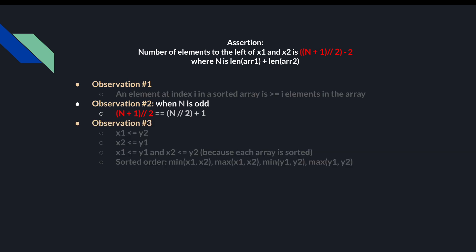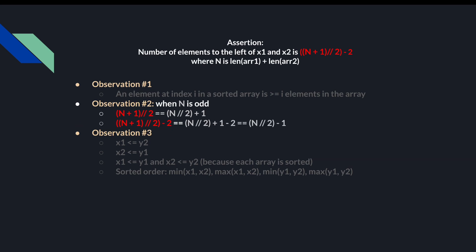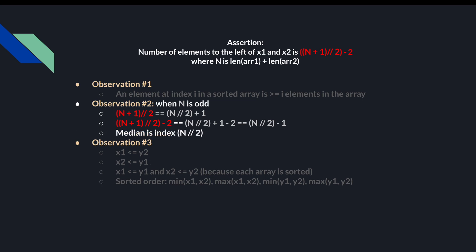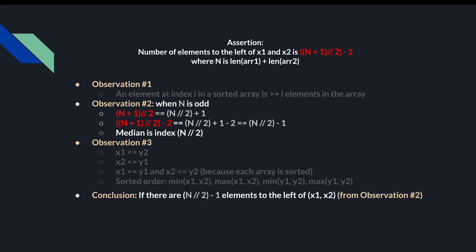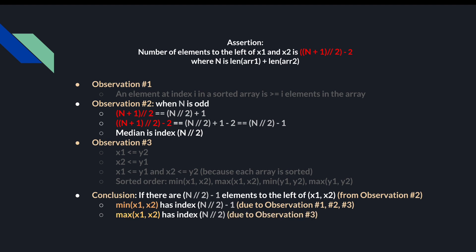In the case where the total number of elements is odd, floor((N + 1) / 2) equals floor(N / 2) plus 1. So the expression for the number of elements to the left of x1 and x2 becomes floor(N / 2) minus 1. Additionally, for odd-length sorted arrays, the median will be at index floor(N / 2). So if there are floor(N / 2) minus 1 elements to the left of x1 and x2, then min(x1, x2) has index floor(N / 2) minus 1 and max(x1, x2) has index floor(N / 2). Therefore, the median in the odd case will be max(x1, x2).